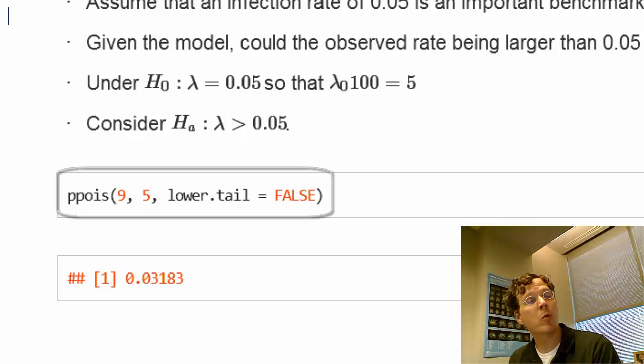We want to specify lower.tail equals FALSE to make sure that we don't get 9 and fewer, but we want strictly greater than 9, which is 10 or more. That will give us our relevant p-value.